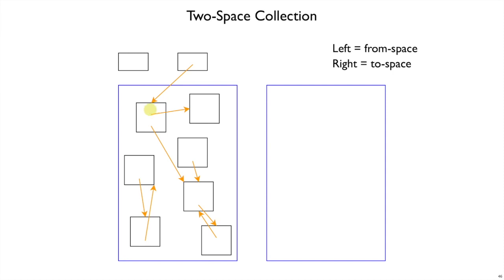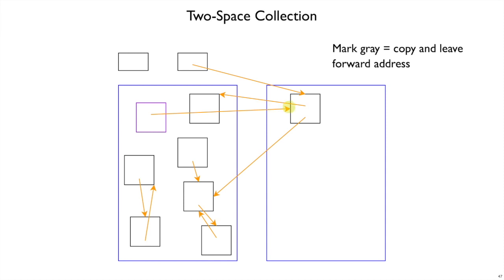Coloring an object gray now corresponds to copying it from from-space to to-space. We copy the object referenced from the register — it's still referring to other objects in from-space, but now this object lives in to-space. We also update the old location of this object, painting it purple, to indicate that this object has moved to its new spot in to-space. Conceptually we've colored this object gray by moving it, and we haven't picked it as a gray object yet.